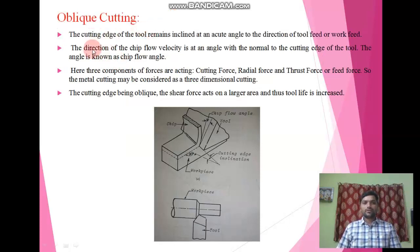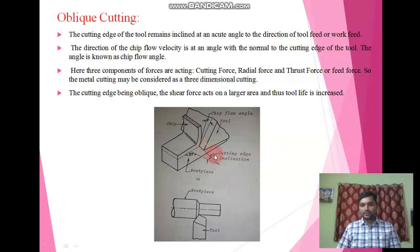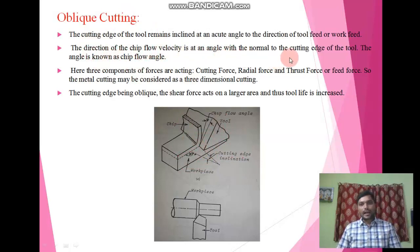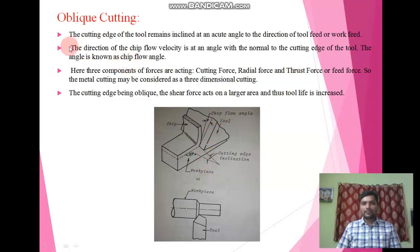The next type is oblique cutting. In oblique cutting, the tool edge remains inclined to the direction of tool feed or work feed. The direction of chip flow velocity is at an angle to the normal of the cutting edge of the tool. This angle is known as the chip flow angle.